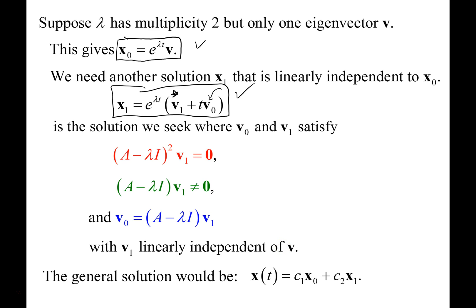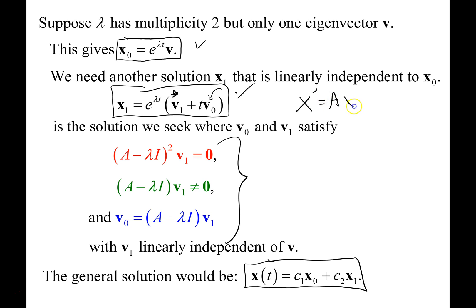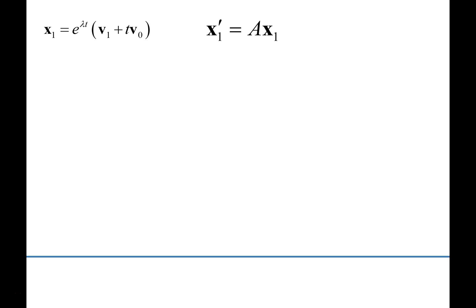Once we have v0 and v1, that gives us the second solution, which will be linearly independent of the first. The general solution is x of t equals c1 times x0 plus c2 times x1. Now let's talk about where these equations come from — the next slide contains the derivation, using the declaration of x1 and the equation x prime equals Ax.